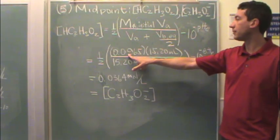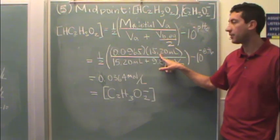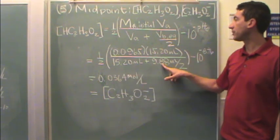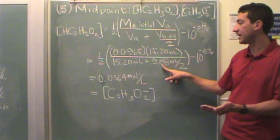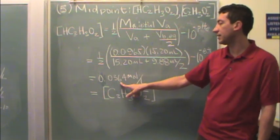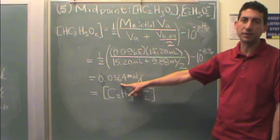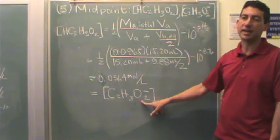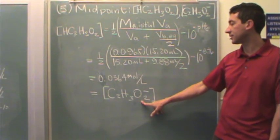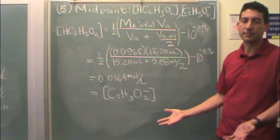We have the initial molarity of the acid, we have the volume, and then here's the volume plus going halfway of the amount of base added. We're going to get this number right here for our example, 0.0364, and that's going to be pretty much the same as the acetic acid acid ion concentration, which is what we would expect. Thank you very much.